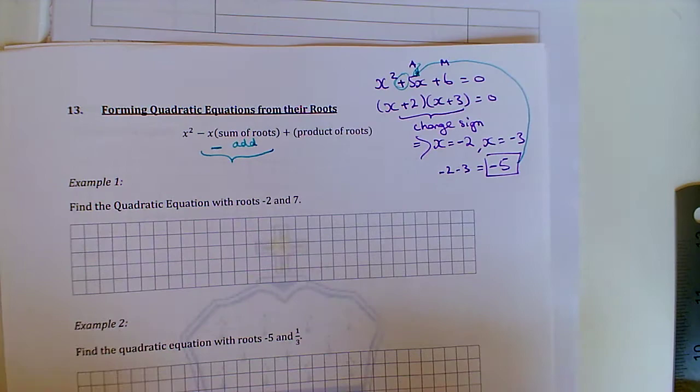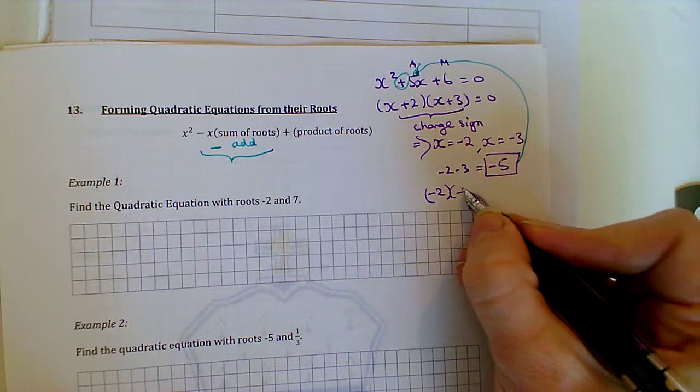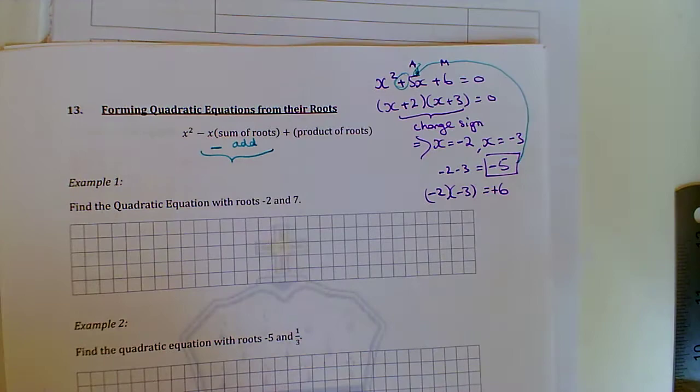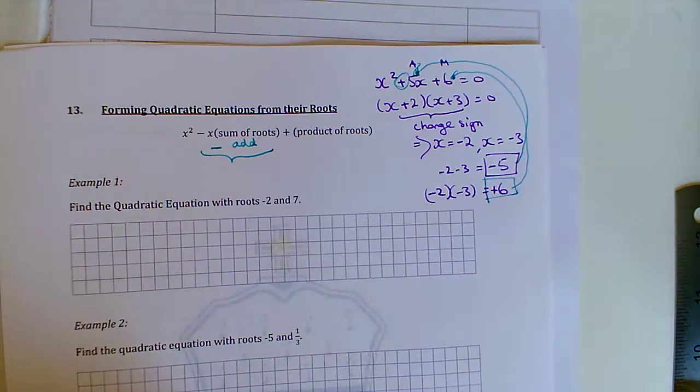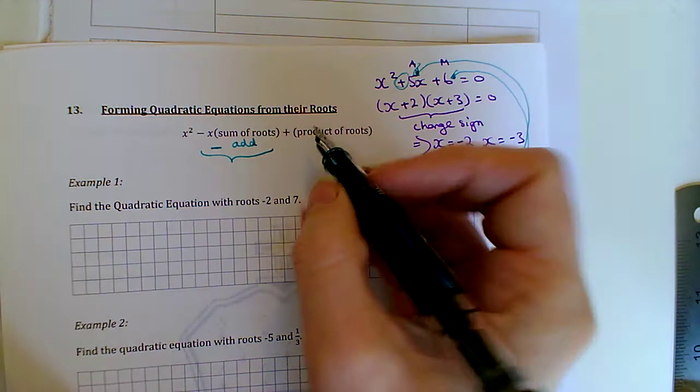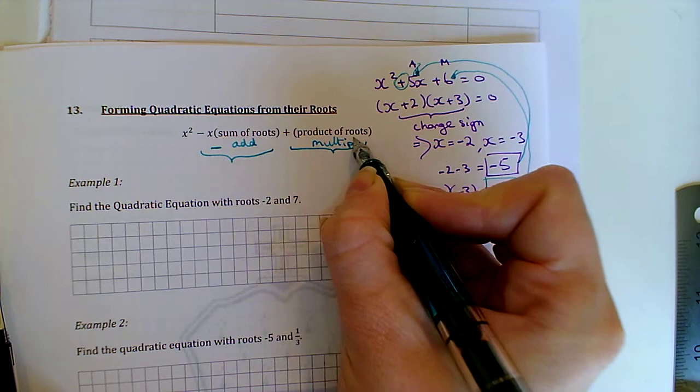Then if I multiply those two numbers together, -2 × -3 gives me minus by minus plus +6. And we'll notice that this is correct. I didn't need to change the sign because when you multiply two negatives together, you end up with a positive. So you don't change the sign here and you just multiply the two numbers.